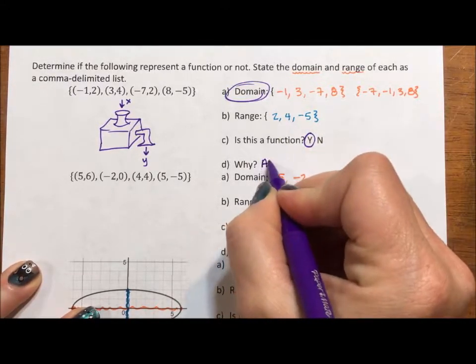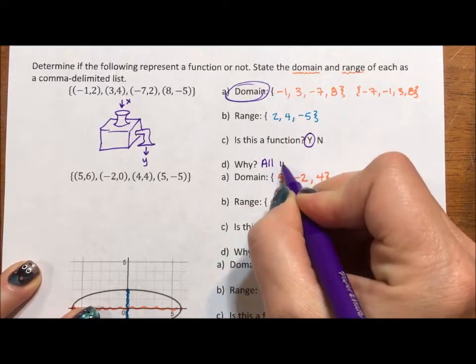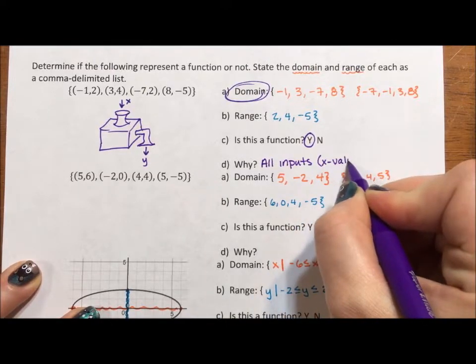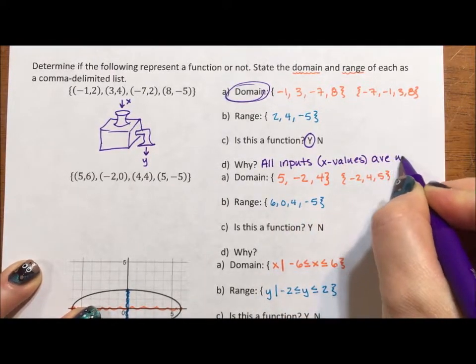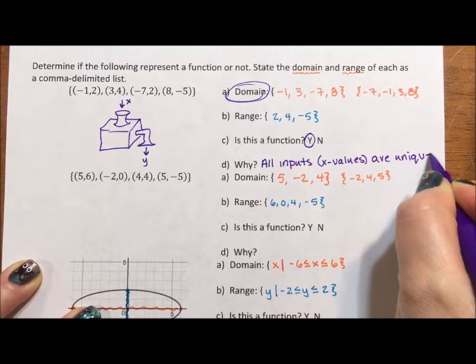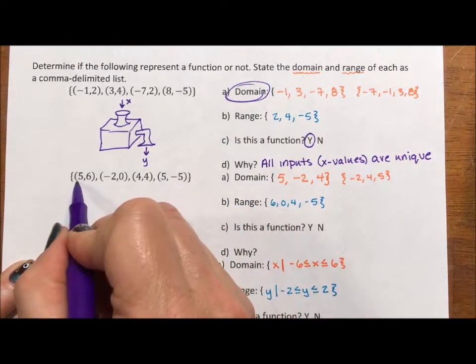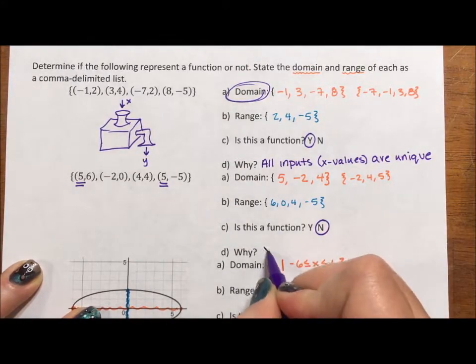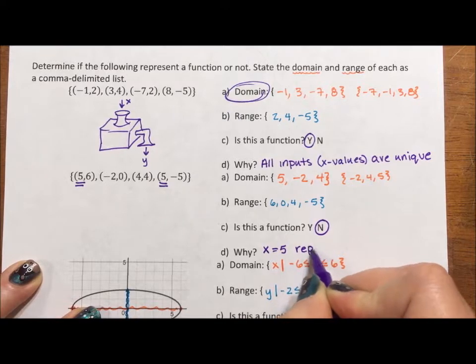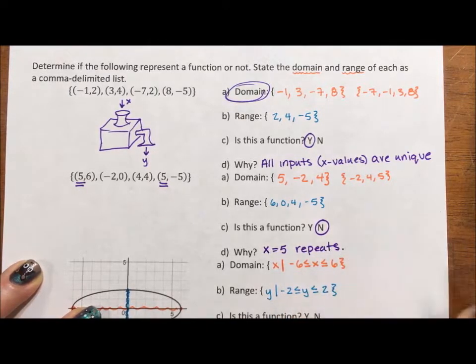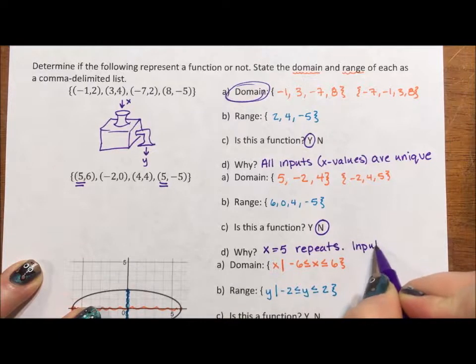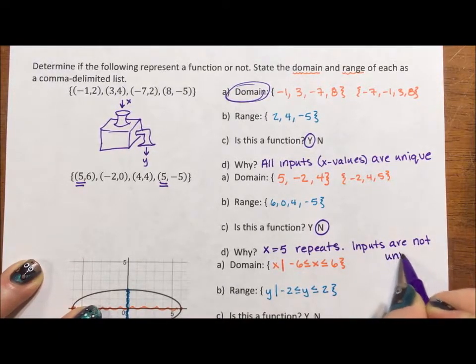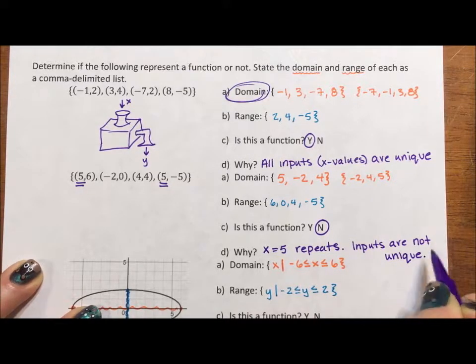So this one is a function. Why? Because all inputs, or x values if you would rather, are unique. For this one, 5, 5. This is not a function. Why? Because x equals 5 repeats. That's the very direct answer. Or you can say inputs are not unique. It's really just that simple.